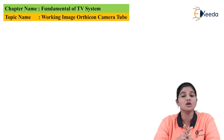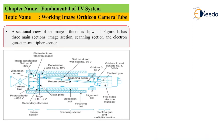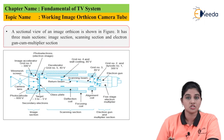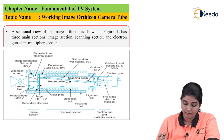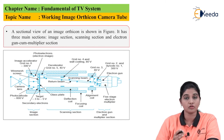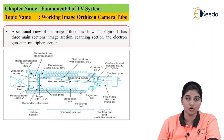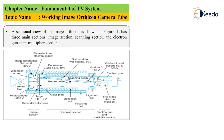Now let's look at the construction of the image orthicon tube. The sectional view shows that the total construction is divided into three different parts: the first part is the image section, the second part is the scanning section, and the third part is the electron gun and multiplier section.